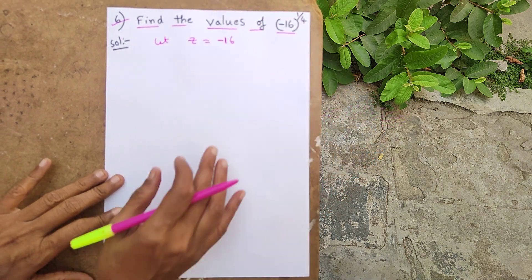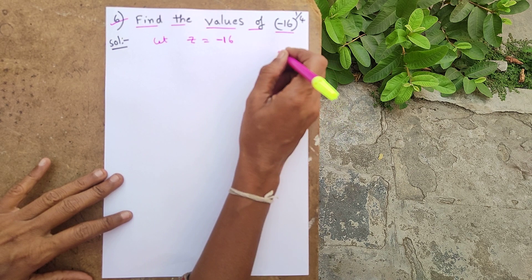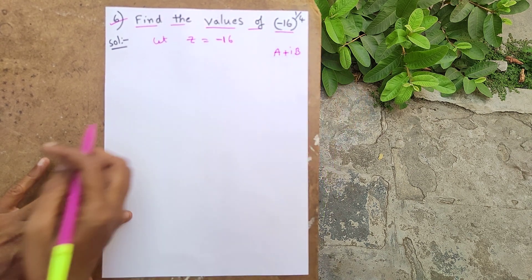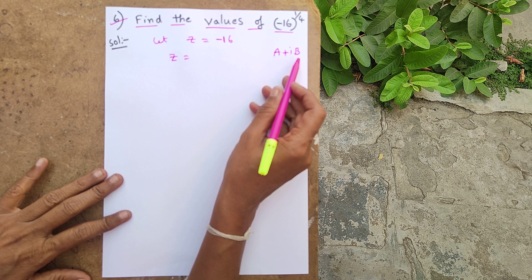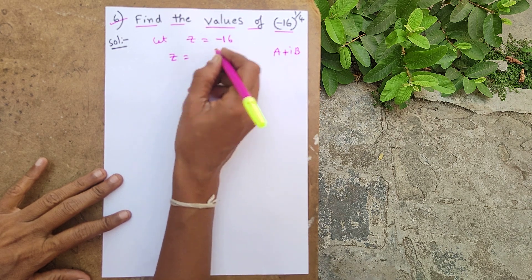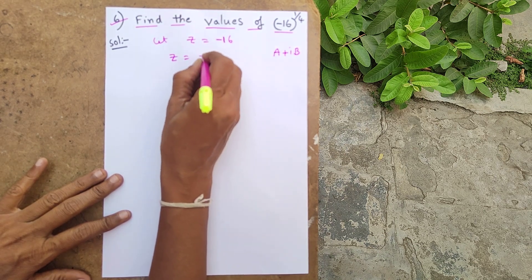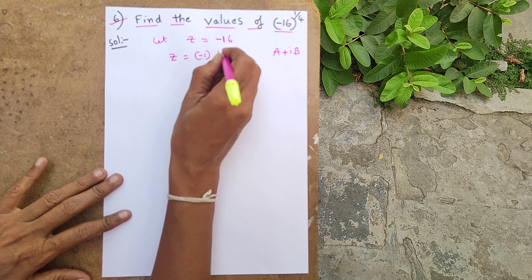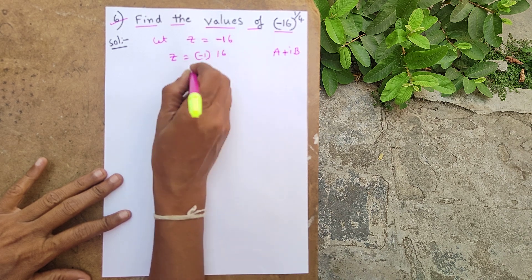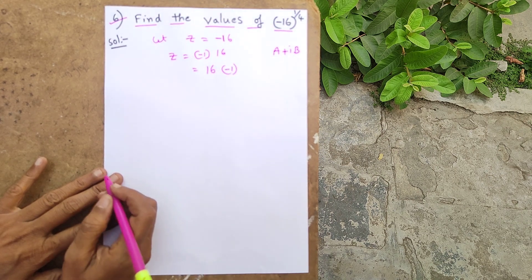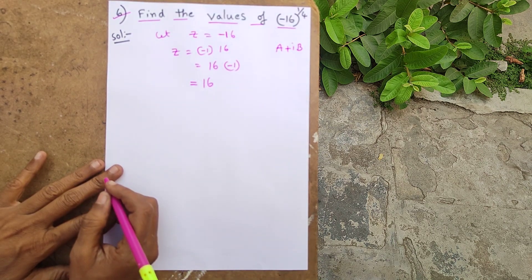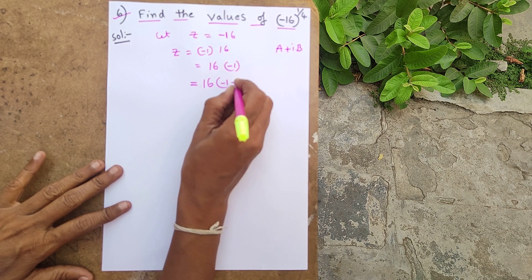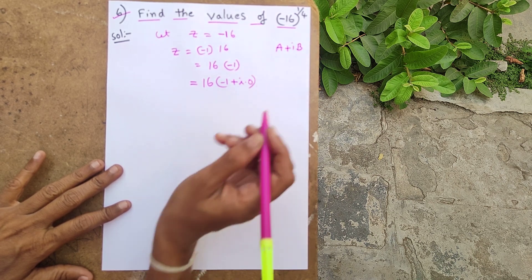We have to find a complex number. We can write z = -16 as 16 into (-1), which equals -1 plus i into 0. So z = -1 + 0i in complex number form.